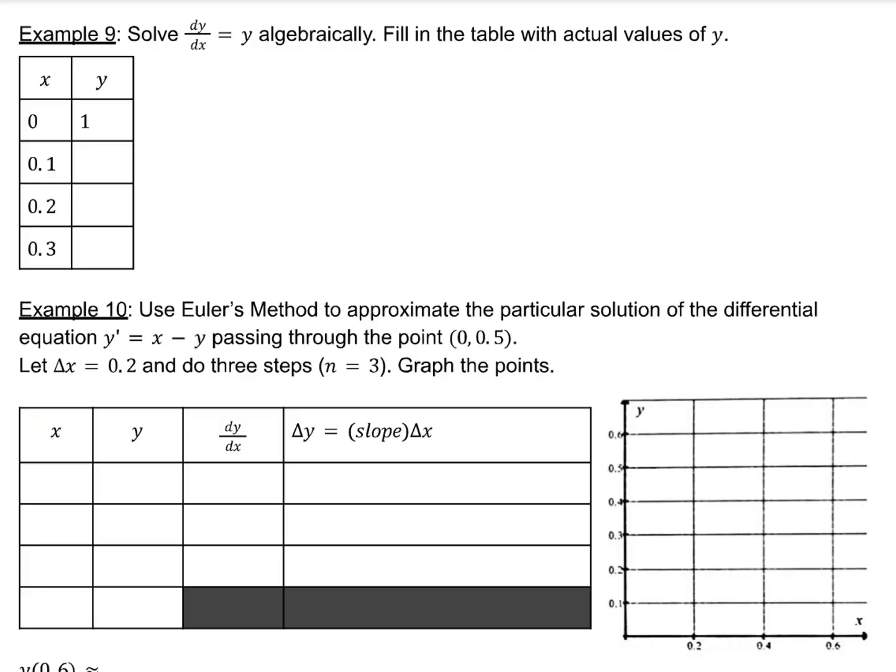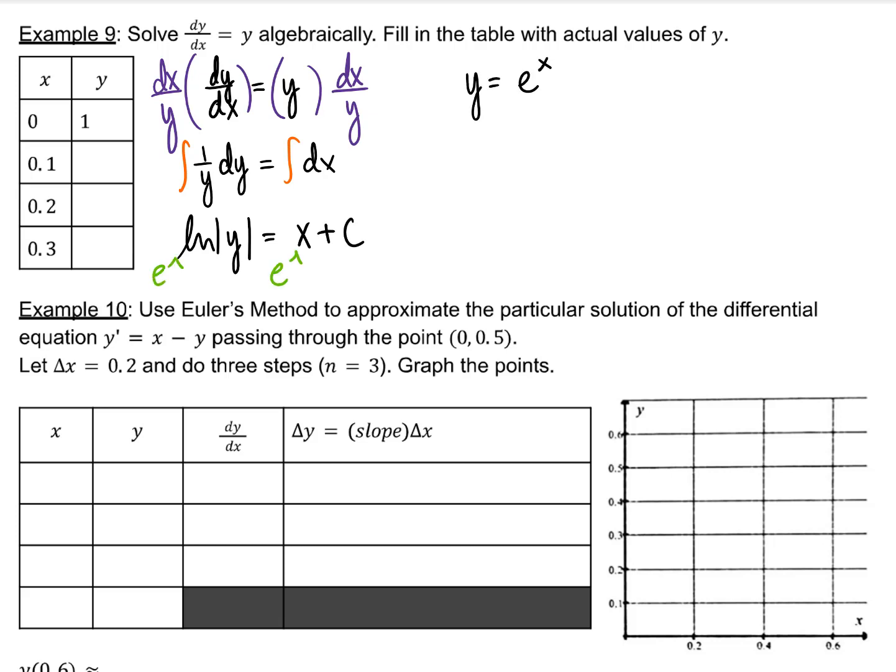And that's how we use Euler's method to estimate a value. We already know the solution to this is e^x, but just in case you want to see that process again, here it is. Remember that Euler's method would be used on unsolvable equations, but here we are solving it so that we can check how close our estimate was to the real value.